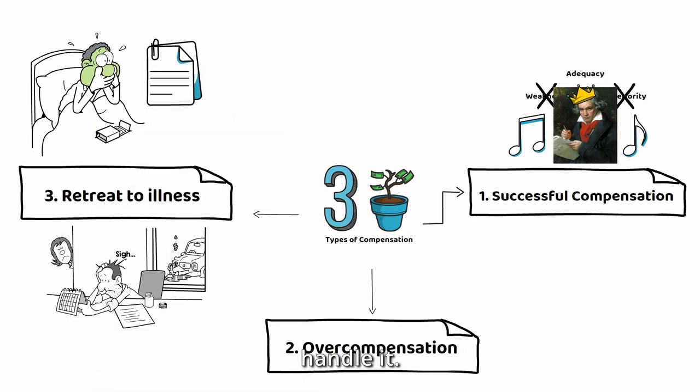Overall, there are three types of compensation: successful compensation, overcompensation, and retreat to illness.